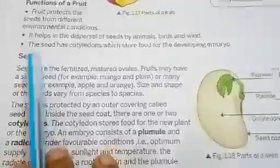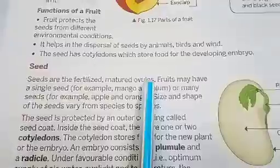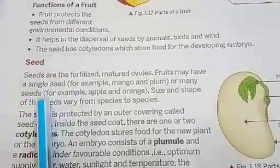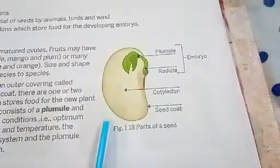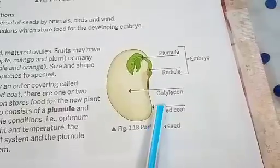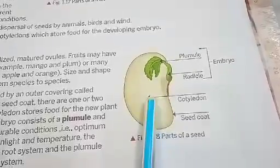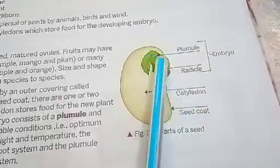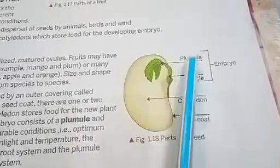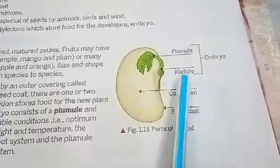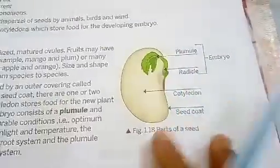Now, what is a seed? Seeds are the fertilized and mature ovules. Sometimes a fruit may have a single seed or many seeds. The seed is protected by a seed coat. The main part of the seed is the cotyledon, which stores food for the embryo — the baby plant. The baby plant has a radicle, which leads to the formation of the root, and a plumule, which leads to the formation of the shoot of the plant.